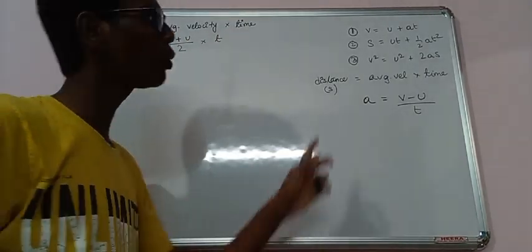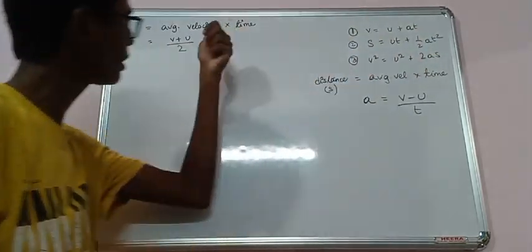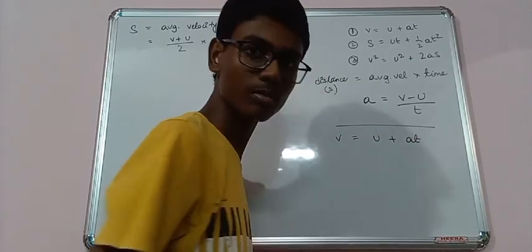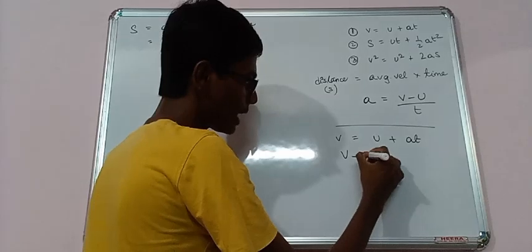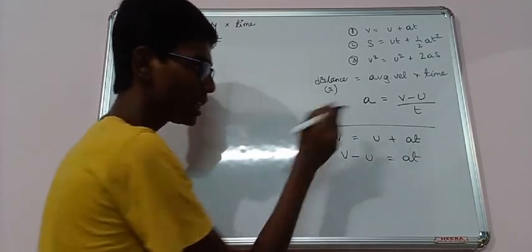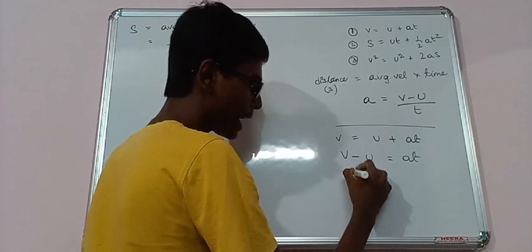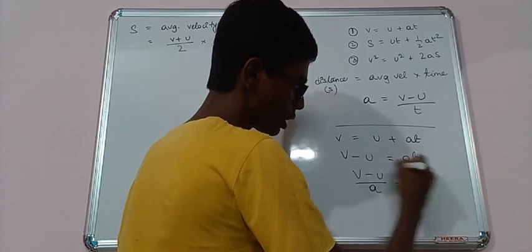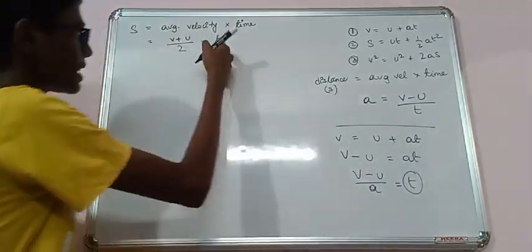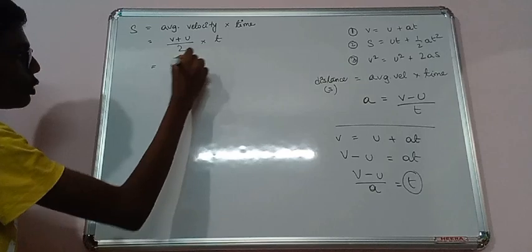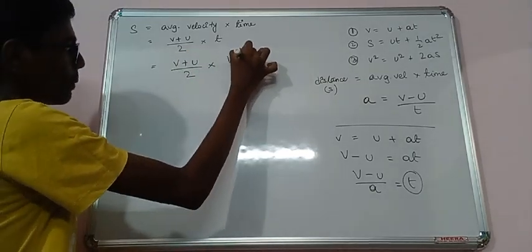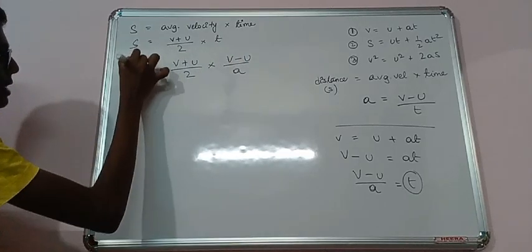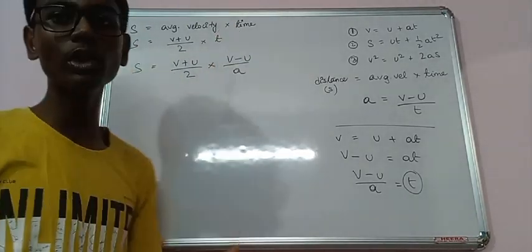Now think one thing. If we find out T from here, we can replace T. So see here, V equals to U plus AT, we know this. So can we do V minus U equals to AT? So T is left alone this side. So we can say that V plus U by 2 into V minus U by A, sorry by A. And this side S as usual. So we are just replacing the value of T from here.